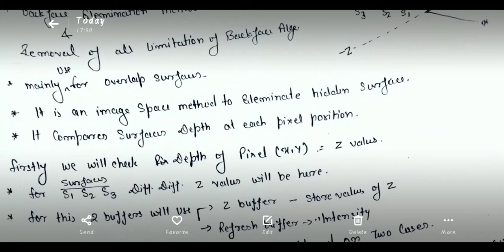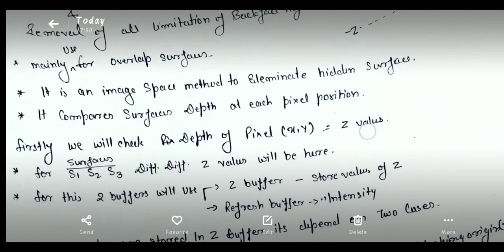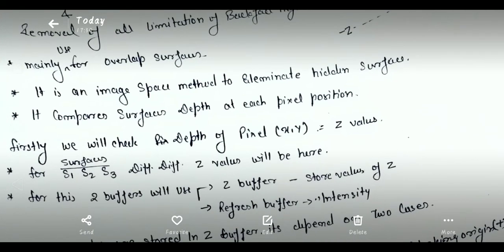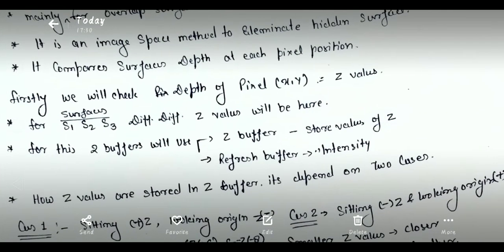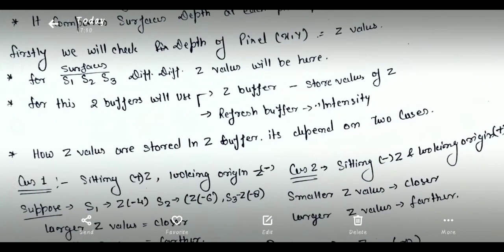To check the depth of pixel (x, y), depth is called the z-value. Different surfaces S1, S2, and S3 have different z-values. For this purpose we have two buffers where values are stored: the z-buffer, where z-values are stored, and the refresh buffer, where the intensity of each pixel is stored.